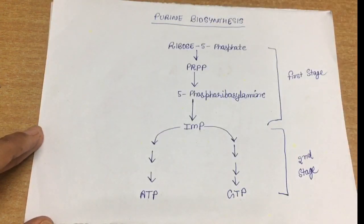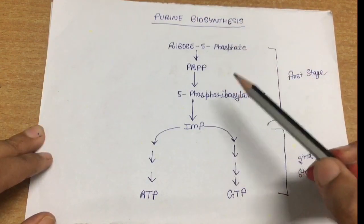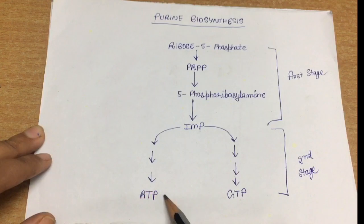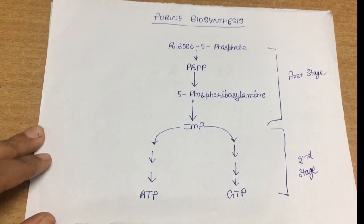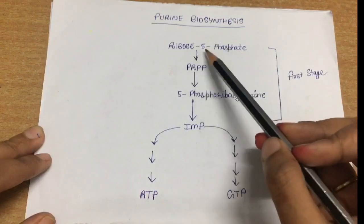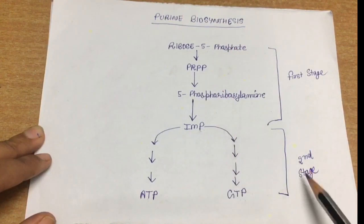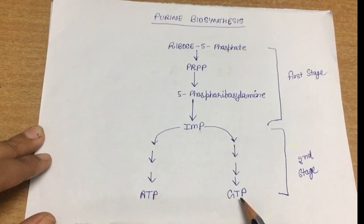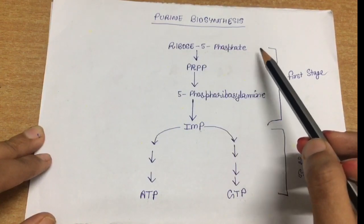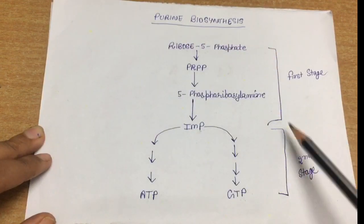The process of purine biosynthesis is very tightly and highly regulated, because if it is not regulated, different concentrations of ATP or GTP will be formed in the cell, which will be very fatal. In the first stage, ribose-5-phosphate gets converted into IMP, and in the second stage, IMP gets converted into ATP and GTP by a branched pathway. Ribose-5-phosphate comes from the pentose shunt pathway, and this is our de novo biosynthesis.